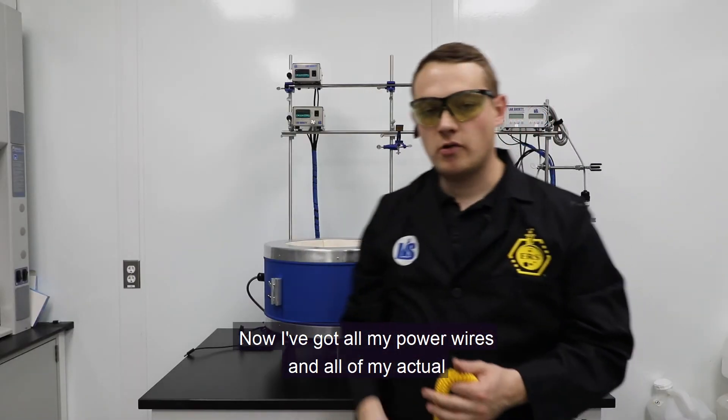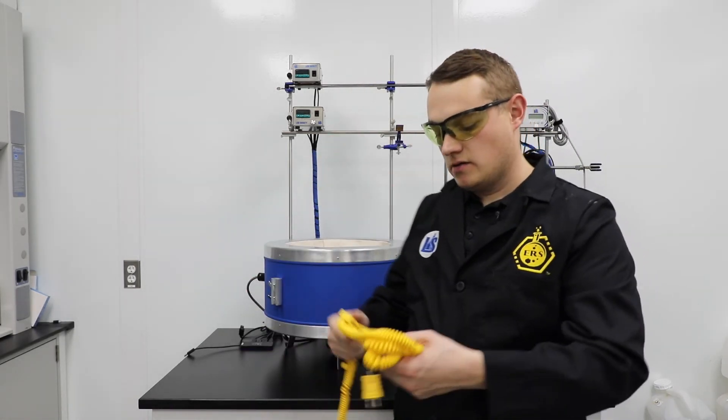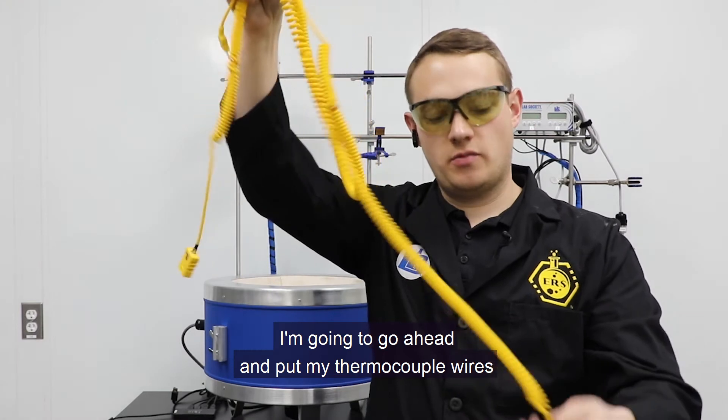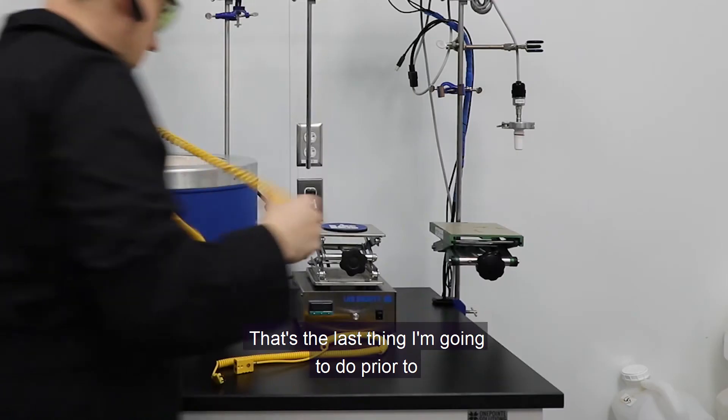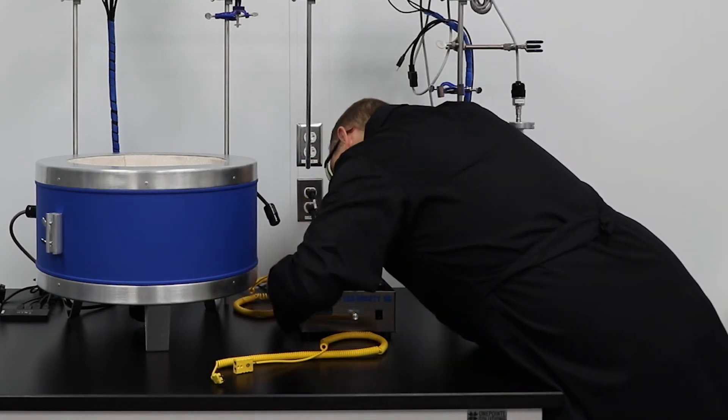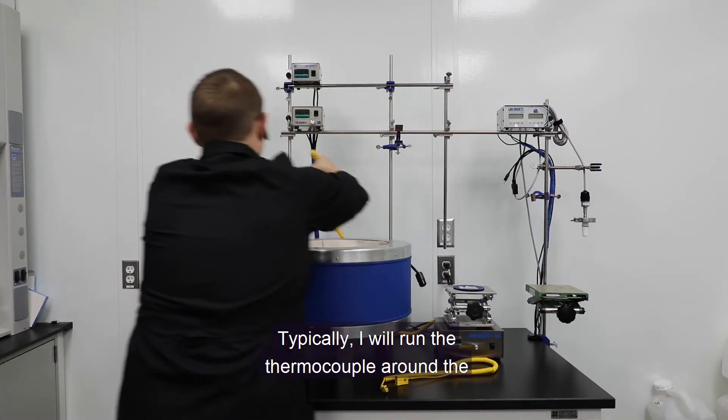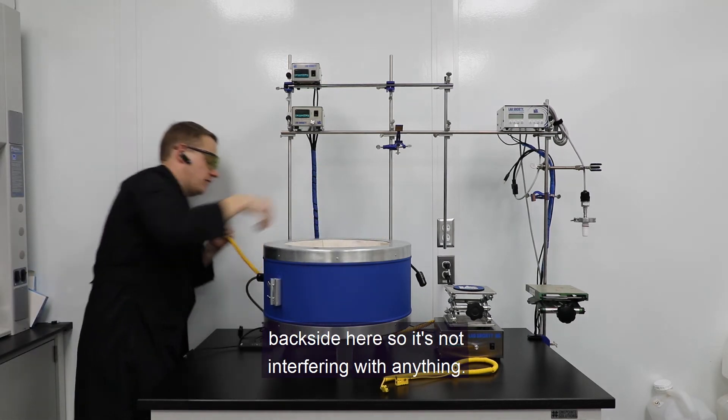Now I've got all my power wires and all of my USB wires in, I'm going to go ahead and put my thermocouple wires in place. So that's the last thing I'm going to do prior to assembling the system. Typically, I will run the thermocouple around the backside here so it's not interfering with anything.